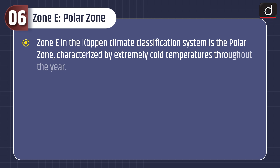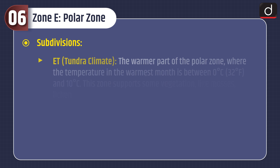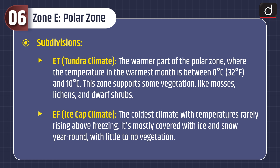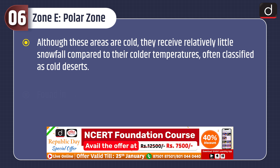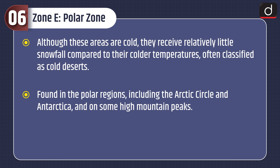Zone E, the Polar Zone, is characterized by extremely cold temperatures throughout the year. The warmest month has an average temperature below 10 degrees Celsius, creating a frigid environment year-round. Subdivisions are ET, Tundra Climate, the warmer part of the polar zone where the temperature in the warmest month is between 0 and 10 degrees Celsius — this zone supports some vegetation like mosses, lichens, and dwarf shrubs. EF, Ice Cap Climate, is the coldest climate with temperatures rarely rising above freezing, mostly covered with ice and snow year-round with little to no vegetation. Although these areas are cold, they receive relatively little snowfall, often classified as cold deserts. Found in the polar regions, including the Arctic Circle, Antarctica, and on some high mountain peaks.